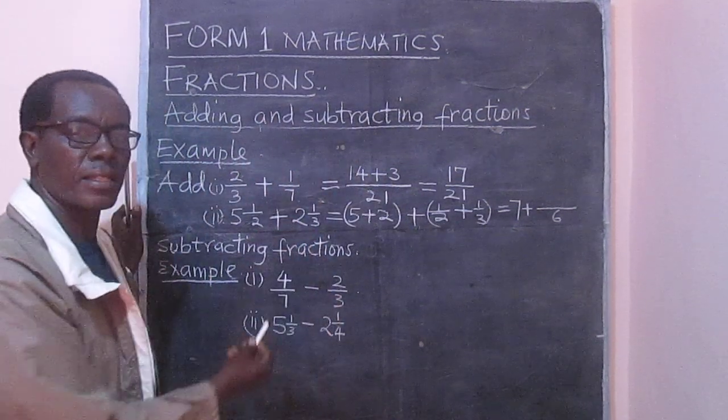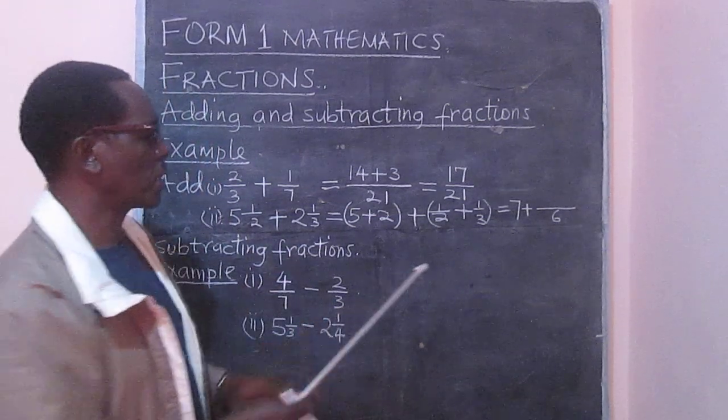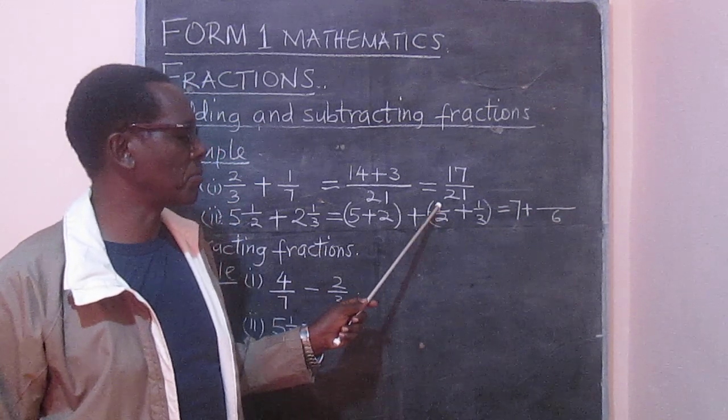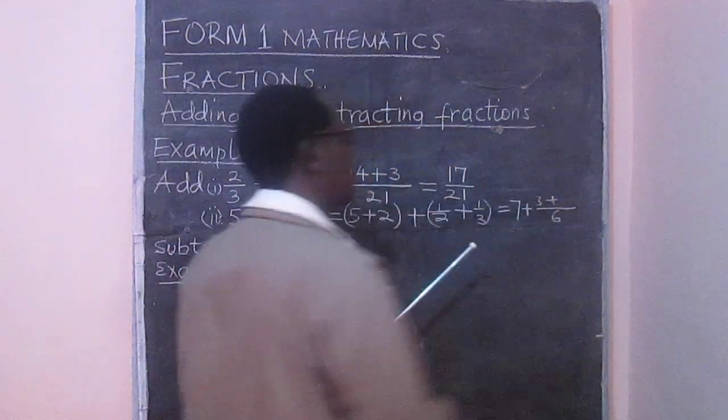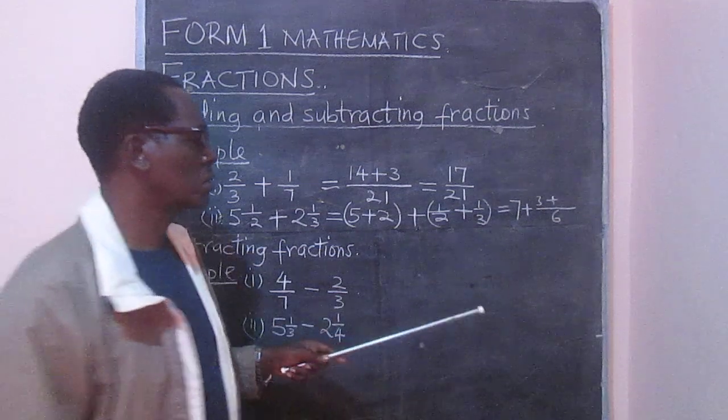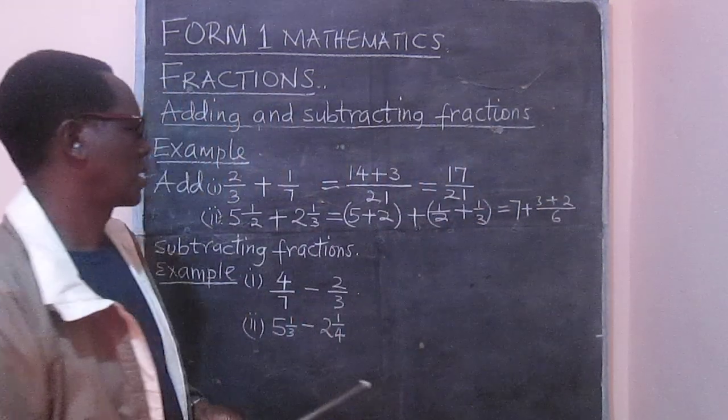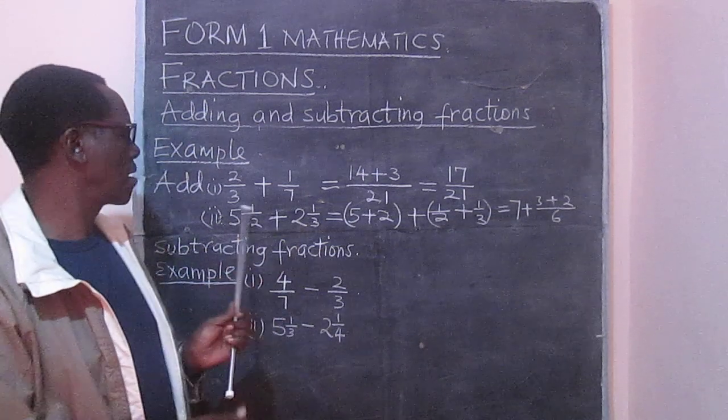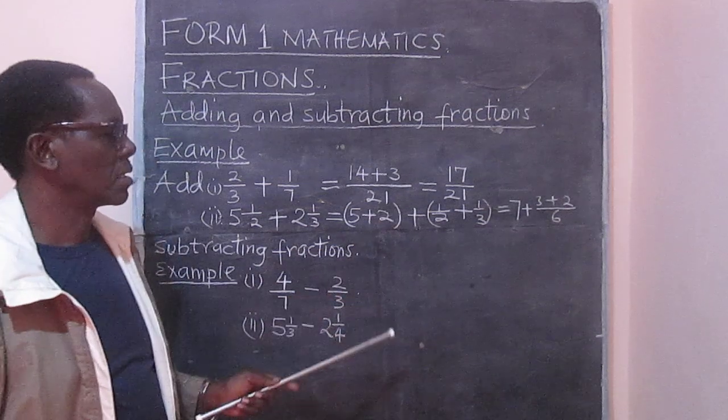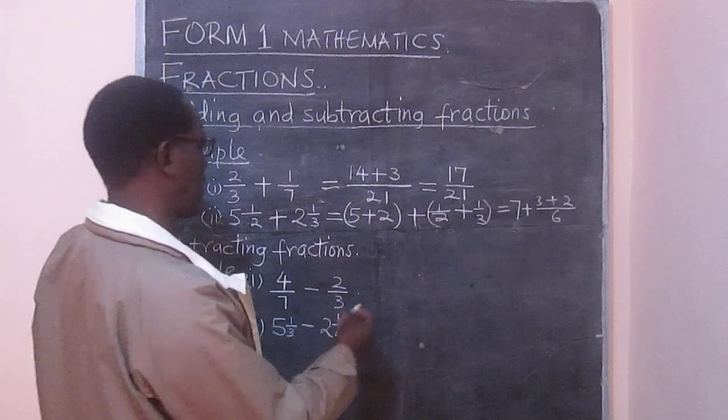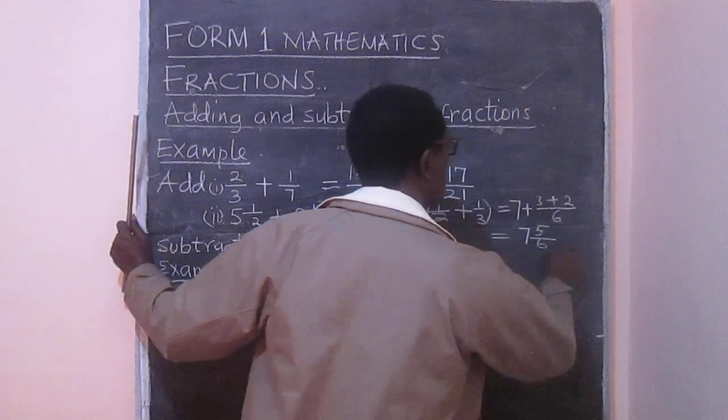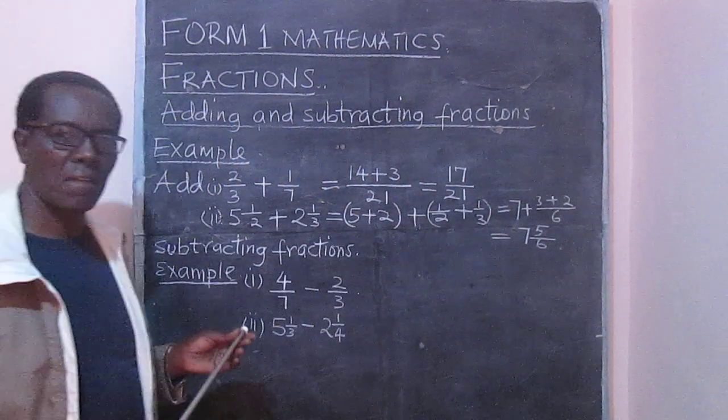So plus, we have said the LCM is 6. And then we divide like we did in the other example. We are going to take 6, divide by 2, that gives us 3. 3 multiplied by 1 is 3. Plus 6 divided by 3, that's 2. 2 multiplied by 1 is just 2. Now we took the whole numbers 5 and 2, so we could have written straight away 7. And there we have it. So our final working in this case will be 7 and 5/6.